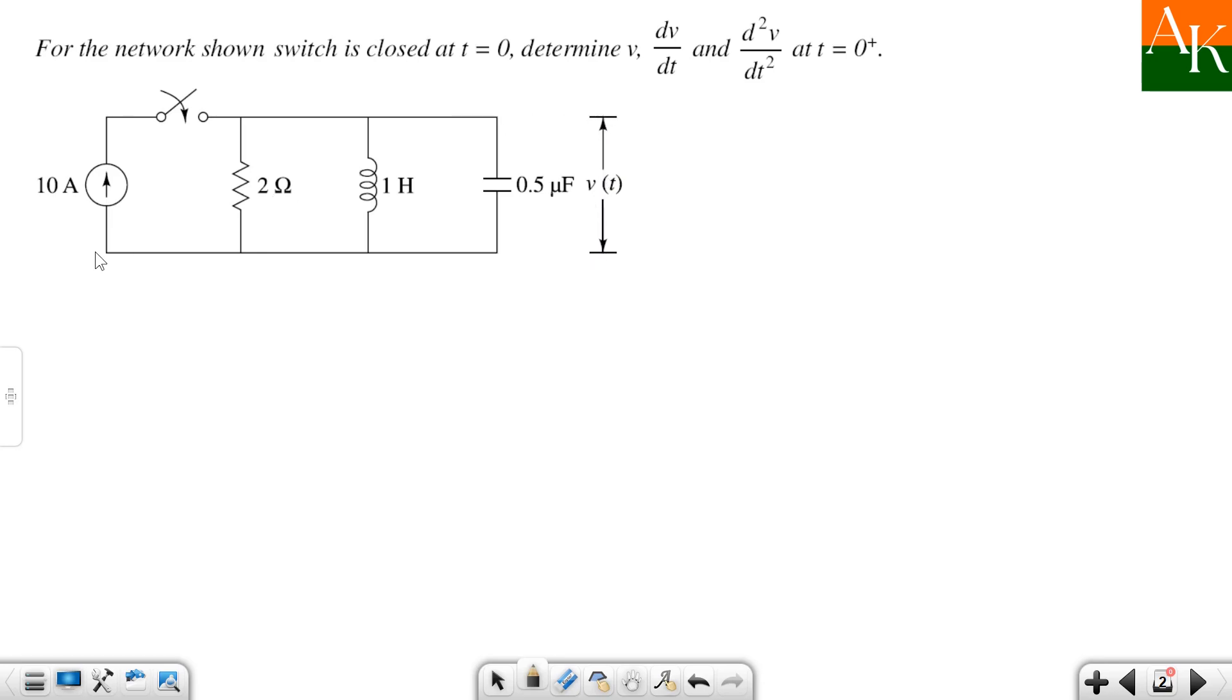That means V of t is measured with respect to this reference node. So you can write even V of t over here. Don't get confused with this notation. V of t is the nodal voltage.